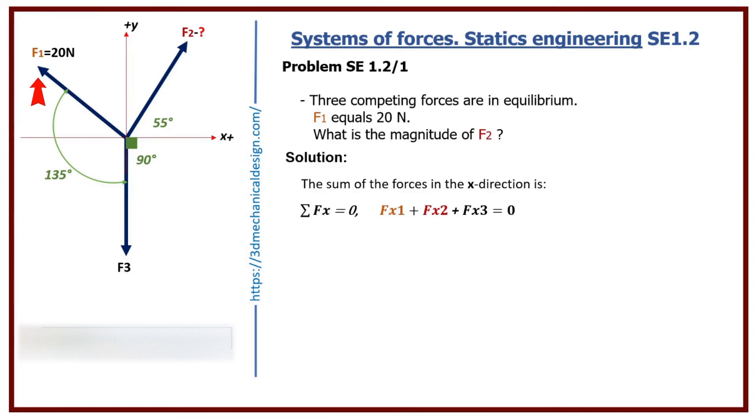Fx1 equals minus 20 times cosine 135 degrees minus 90 degrees. Fx1 equals minus 14.14 newtons.